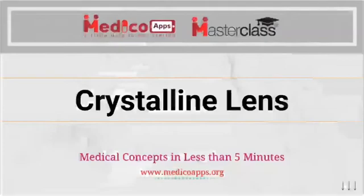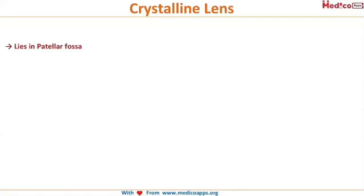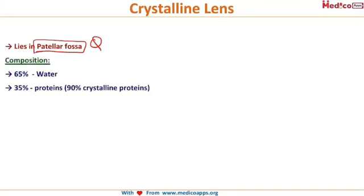Now let's look at the crystalline lens. The crystalline lens is located in the patellar fossa — the patellar fossa is the site of location of the lens. The lens is made up of 65 percent water and 35 percent proteins, most of which are called the crystalline proteins.